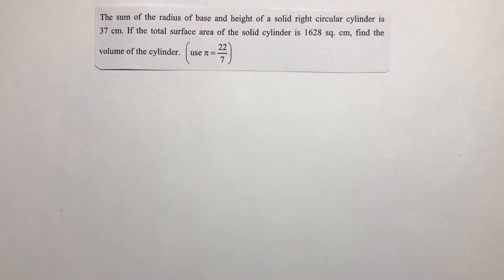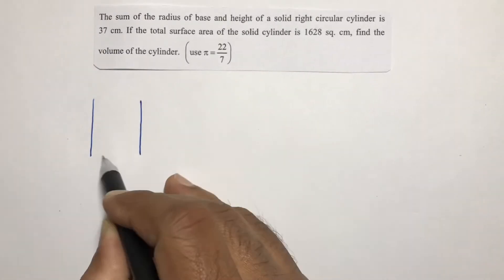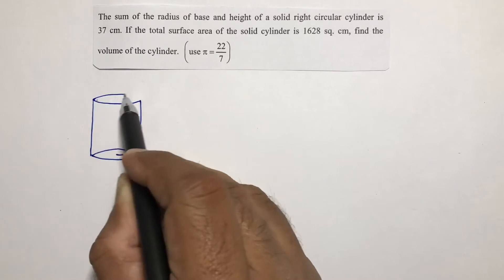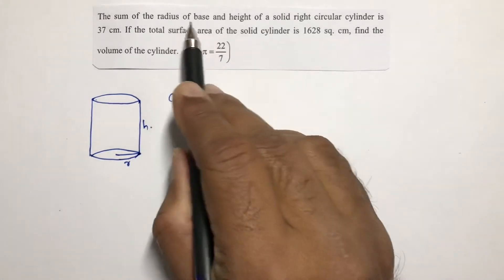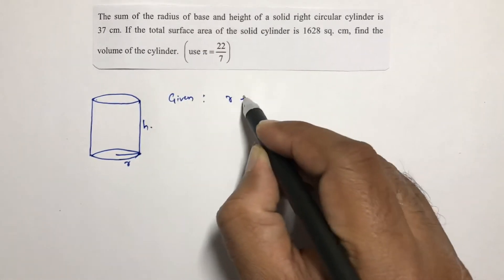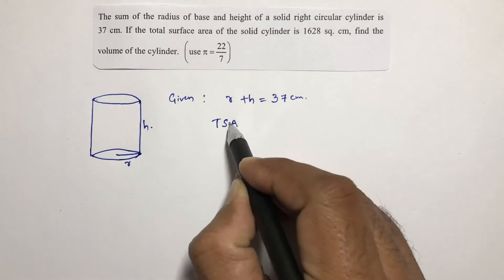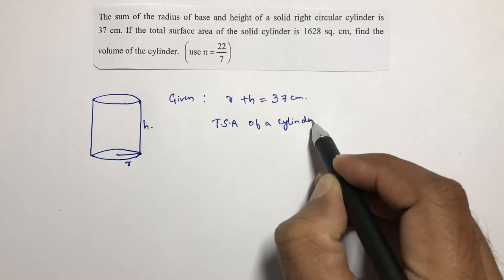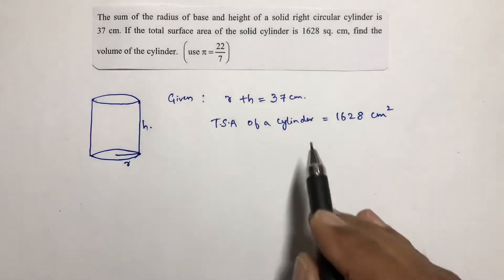The sum of the radius of the base and height of a solid right circular cylinder is 37 centimeters. If we take a cylinder with base radius r and height h, the sum r plus h equals 37 centimeters. The total surface area of a solid cylinder is 1628 centimeter square. Find the volume of the cylinder.